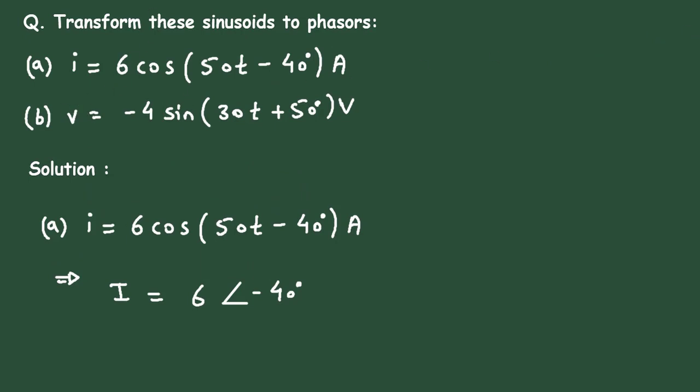But for this B, why we have taken this directly? Because it is in cosine form, positive cosine form. But here for this question B, the voltage, it is given in minus sine form. So first of all we have to convert this into positive cosine.